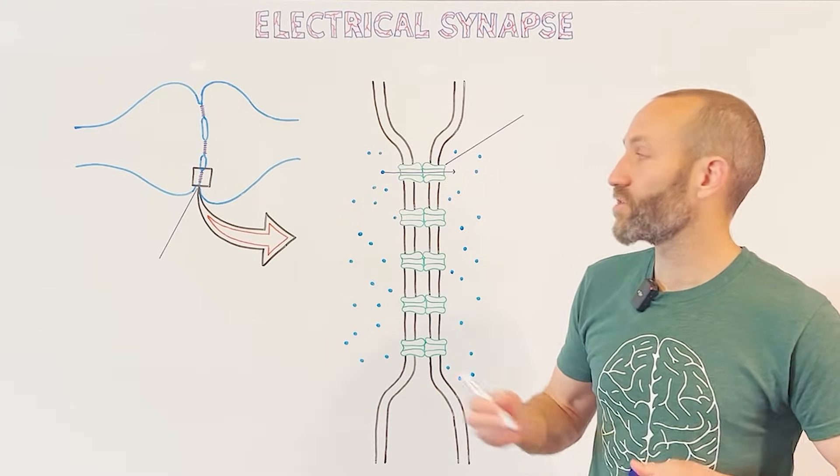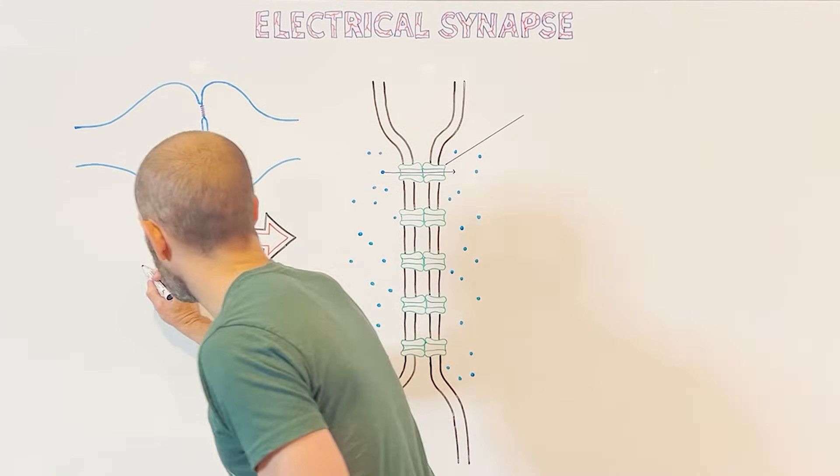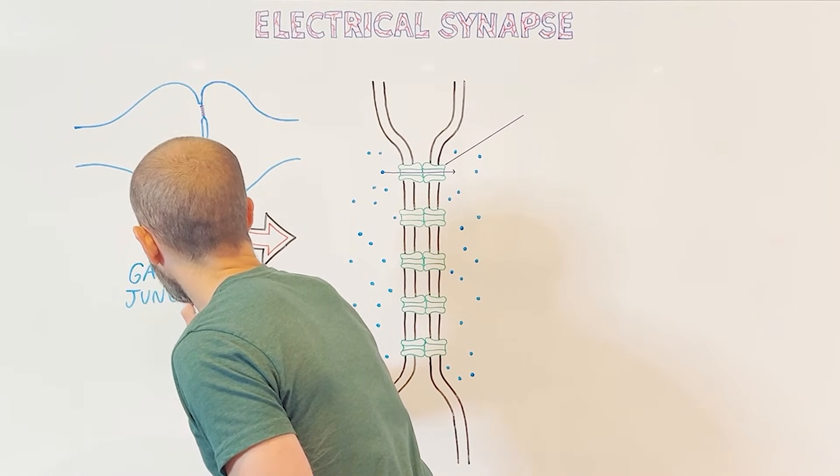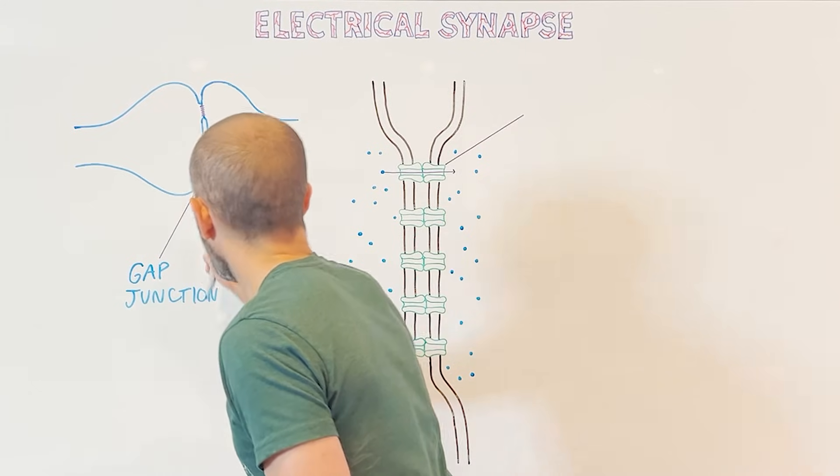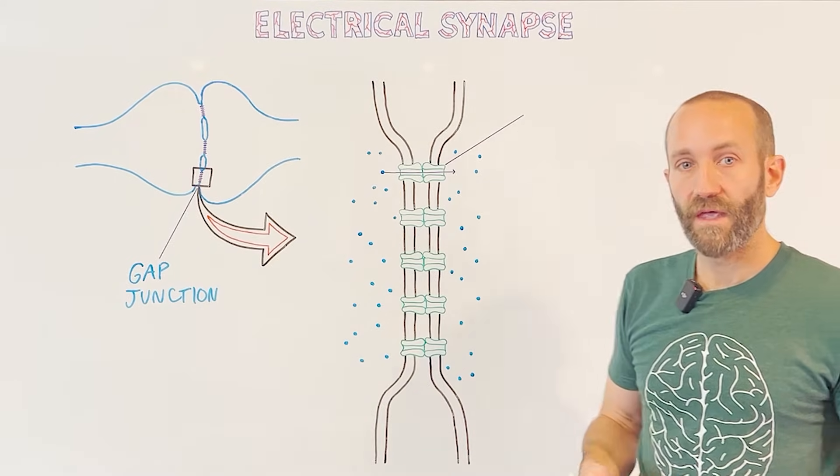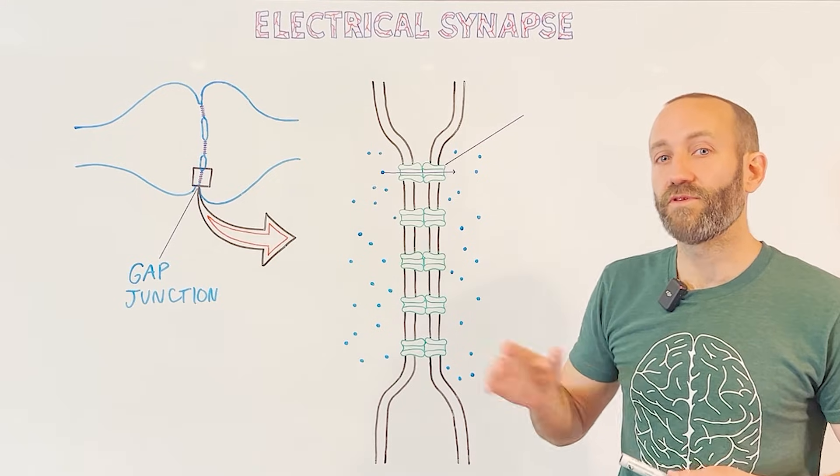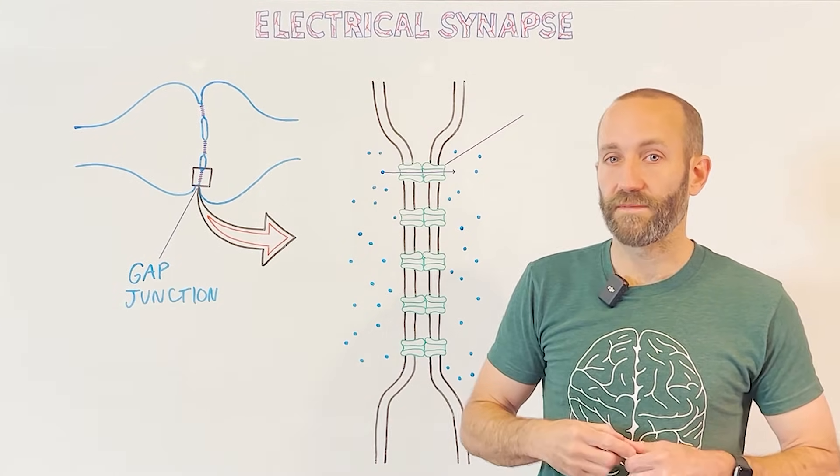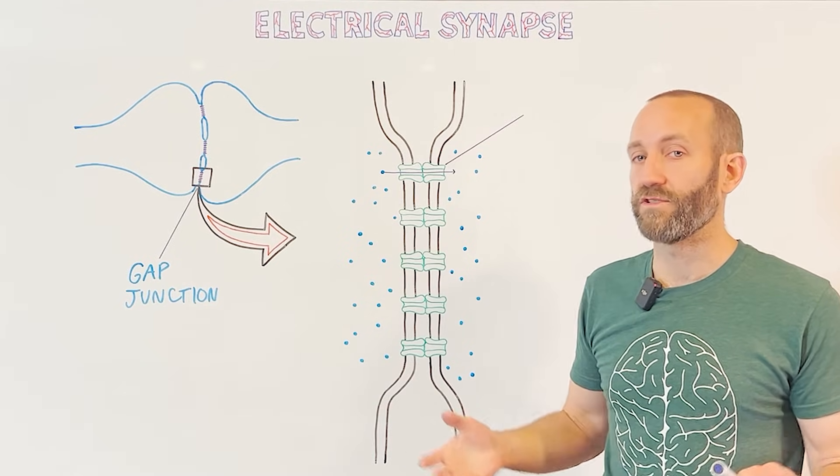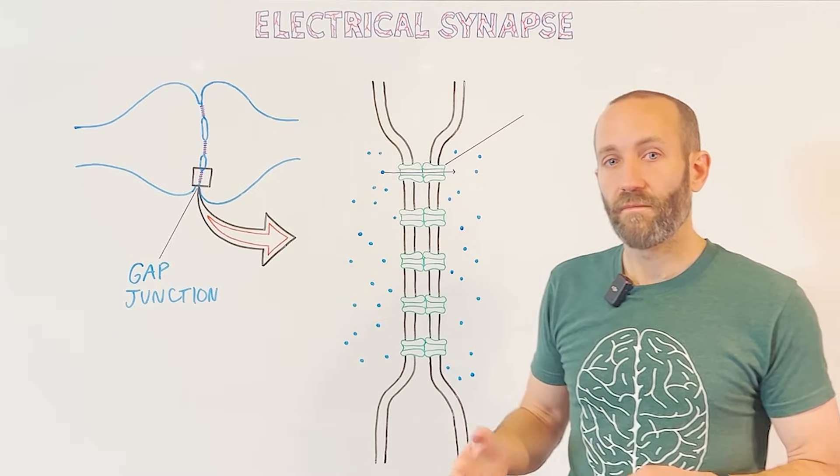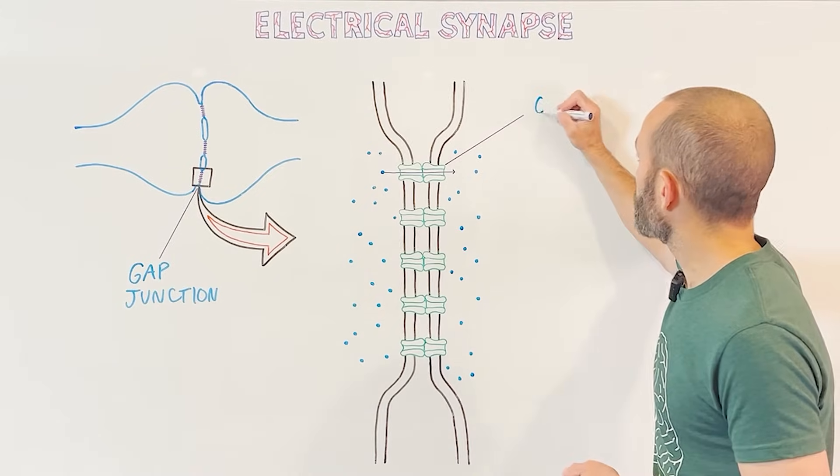At an electrical synapse, neurons communicate at a specialized region called a gap junction. So again, we have here a gap junction and then a close-up of a gap junction over here. At electrical synapses, the space between the presynaptic and postsynaptic neurons is much smaller than in chemical synapses. It's only about 2 to 4 nanometers across. And the pre- and postsynaptic neurons are actually connected by protein structures called gap junction channels.